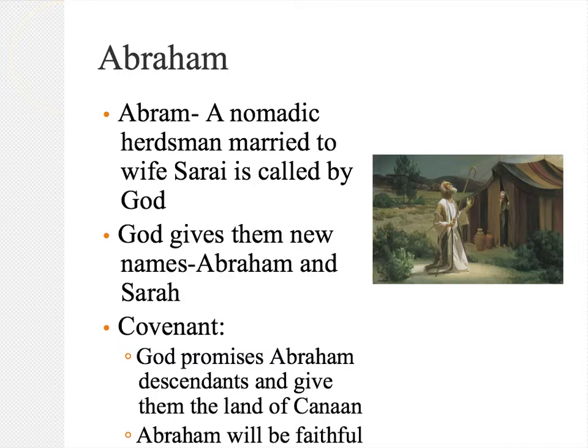God promises Abraham descendants, which seemed very unlikely at Abraham's old age, and promises him the land of Canaan. In exchange for Abraham's fidelity, he must remain faithful to his God — in a time where polytheism was the predominant ideal of the day, where people didn't bow down to just one God. And yet that is exactly what Abraham was expected to do.